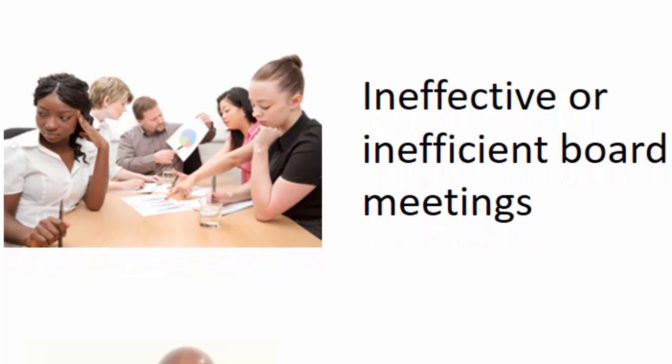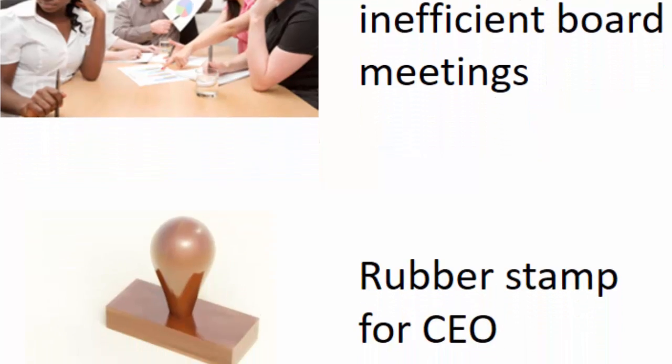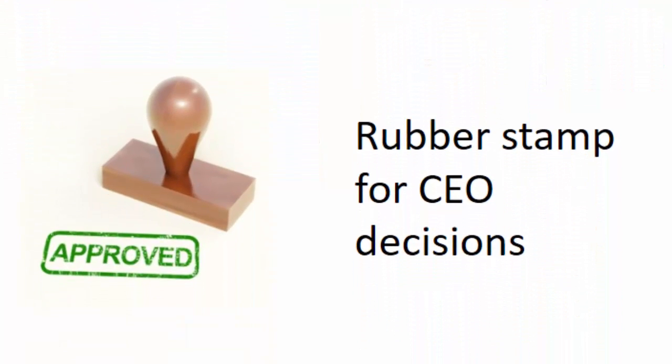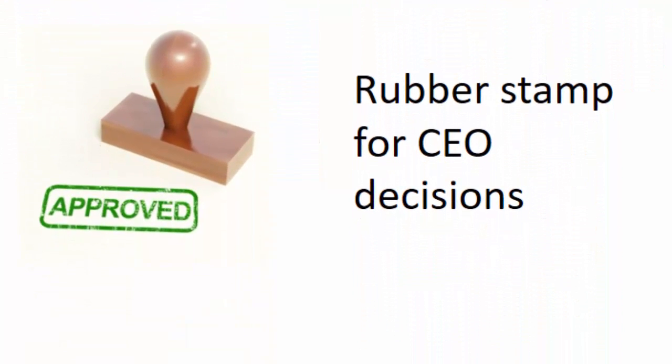Another common dysfunction is a board that is simply a rubber stamp for the CEO. The CEO brings items to the board for their approval and everybody nods in agreement, and there's really no meaningful discussion or difference of opinion.